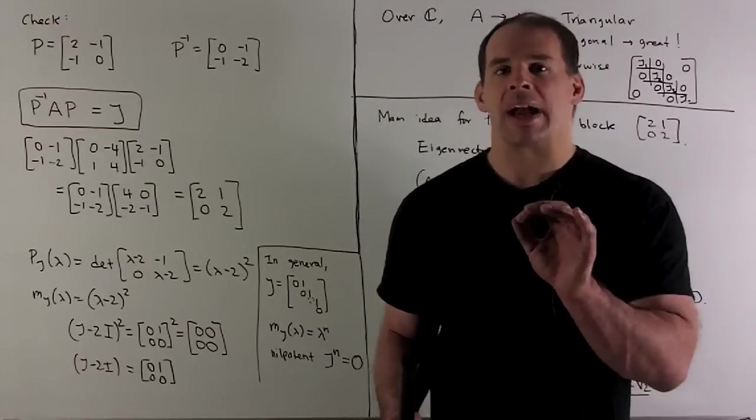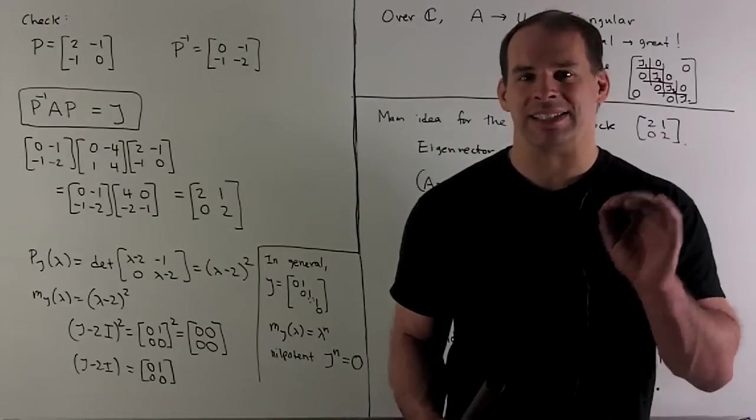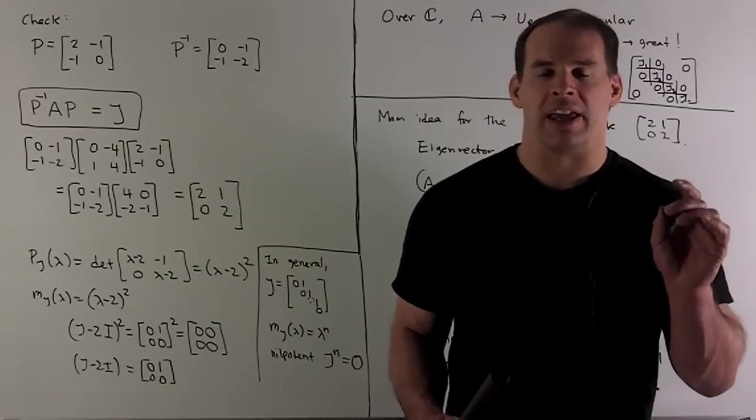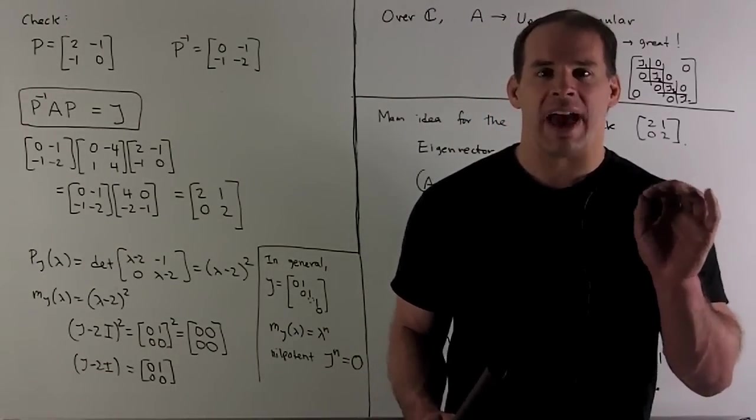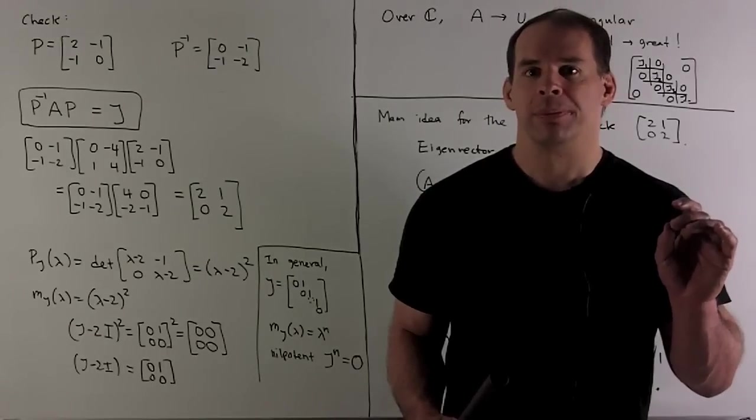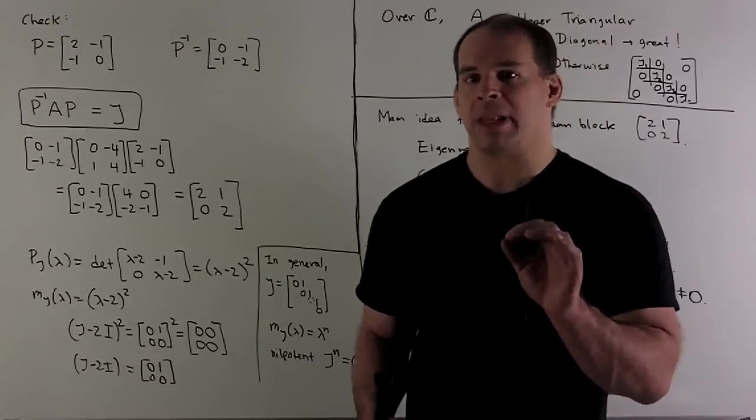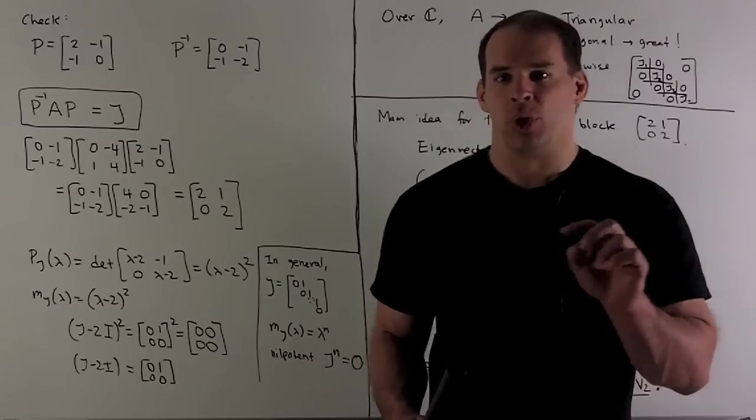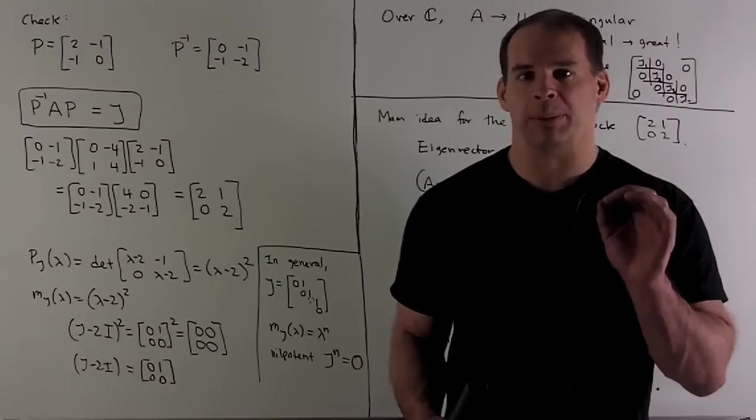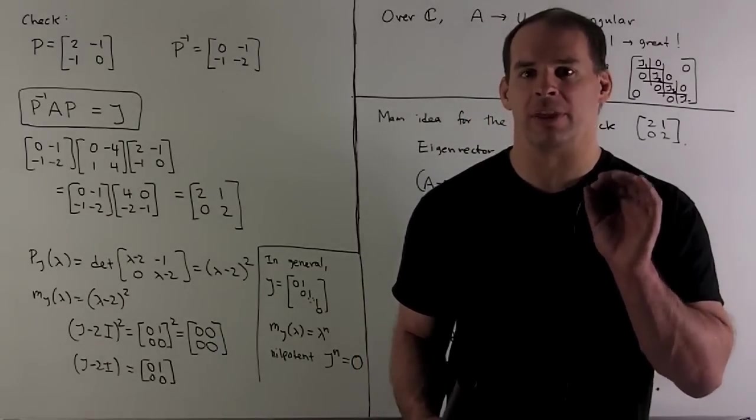If you note, Jordan block is sort of the opposite of a diagonal matrix. In a diagonal matrix, we only have linear factors in the minimal polynomial. So, for a Jordan block, we have those powers as high as they can possibly be, equal to the degree of the polynomial.